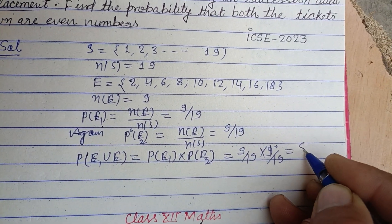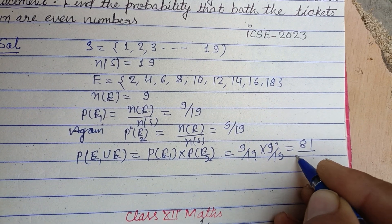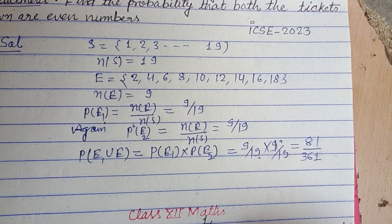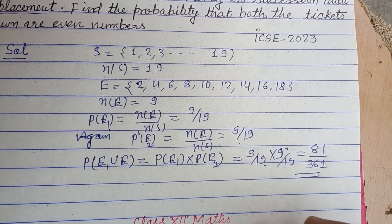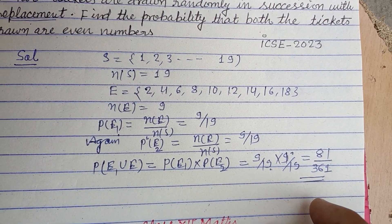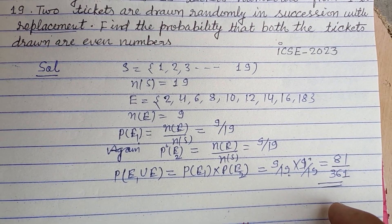This equals 81/361. 9 times 9 is 81, and 19 times 19 is 361. So 81/361 is the probability. I hope you got it, thanks for watching.